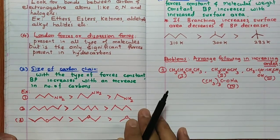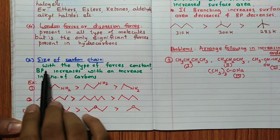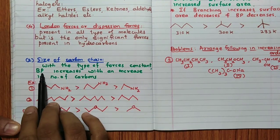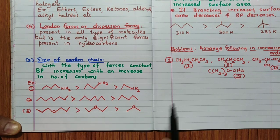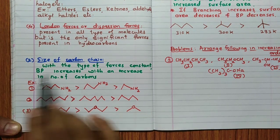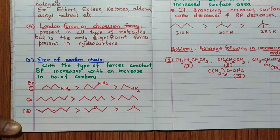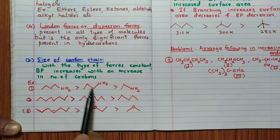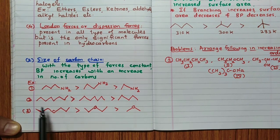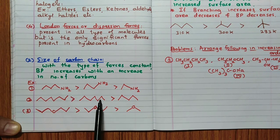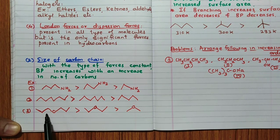The second factor is size of the carbon chain. With the type of forces kept constant, boiling point increases with increasing number of carbons, as molecular mass increases. For example, among amines with four, three, and two carbons, or among ethers of different chain lengths, the larger molecule has the higher boiling point.